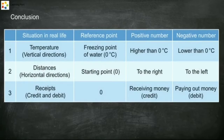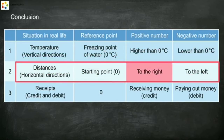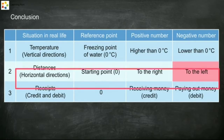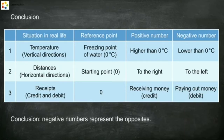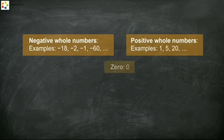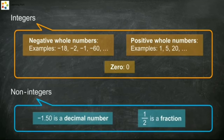Positive and negative numbers are used in many ways in our daily lives. If positive represents above a reference point, then negative represents below the same reference point. If positive represents a direction to the right, then negative represents a direction to the left. If positive represents money received, then negative represents money paid out. The group of all negative whole numbers, positive whole numbers, and zero are called integers. Any decimal numbers or fractions are non-integers — hence integers do not include any decimal numbers.